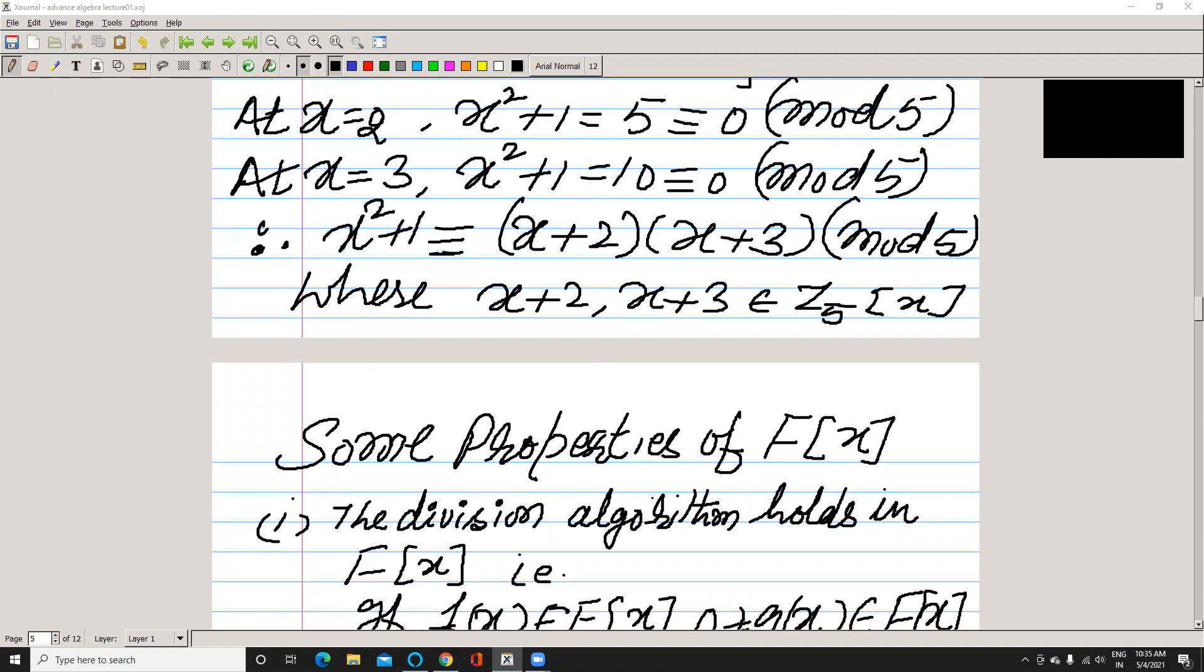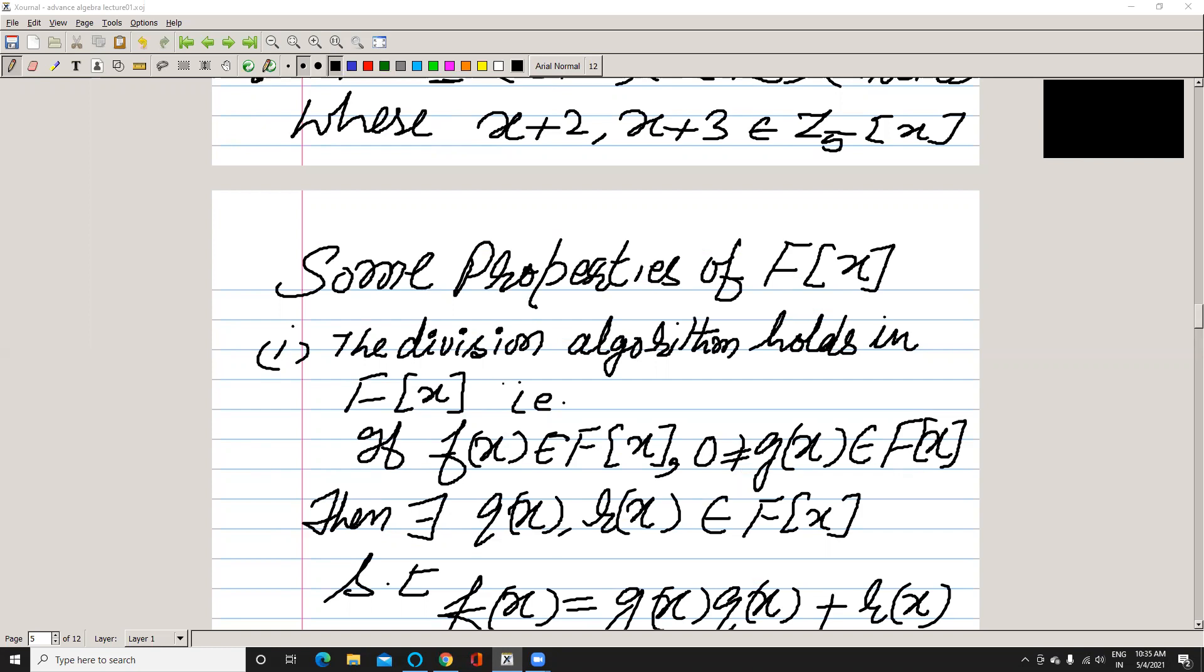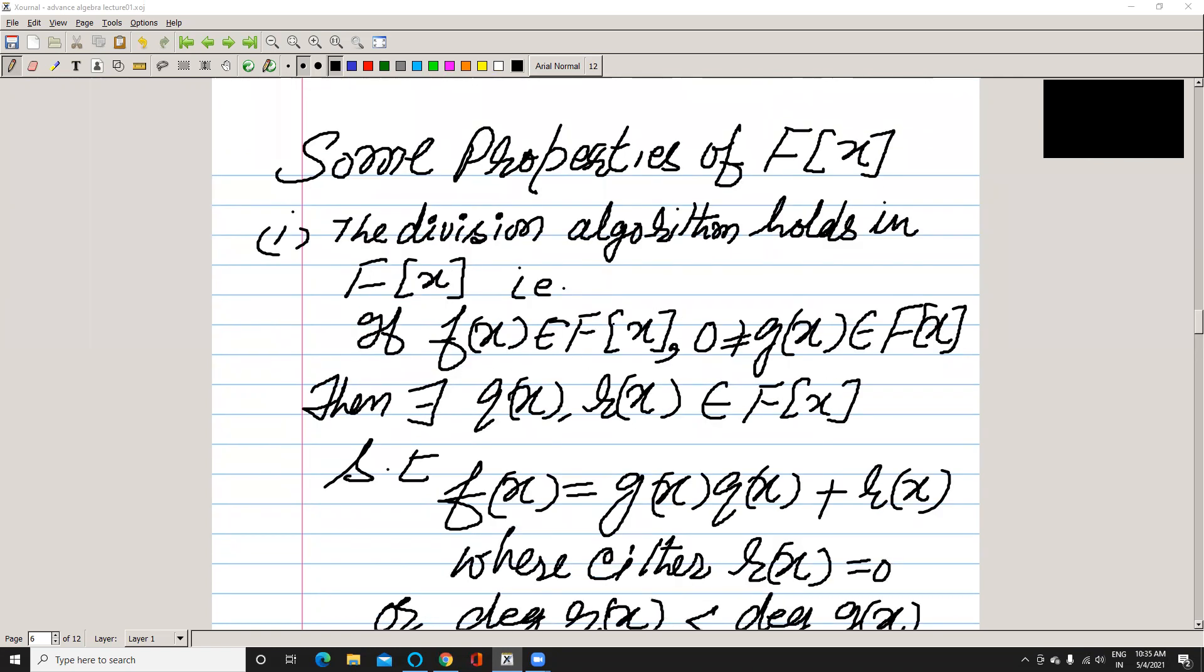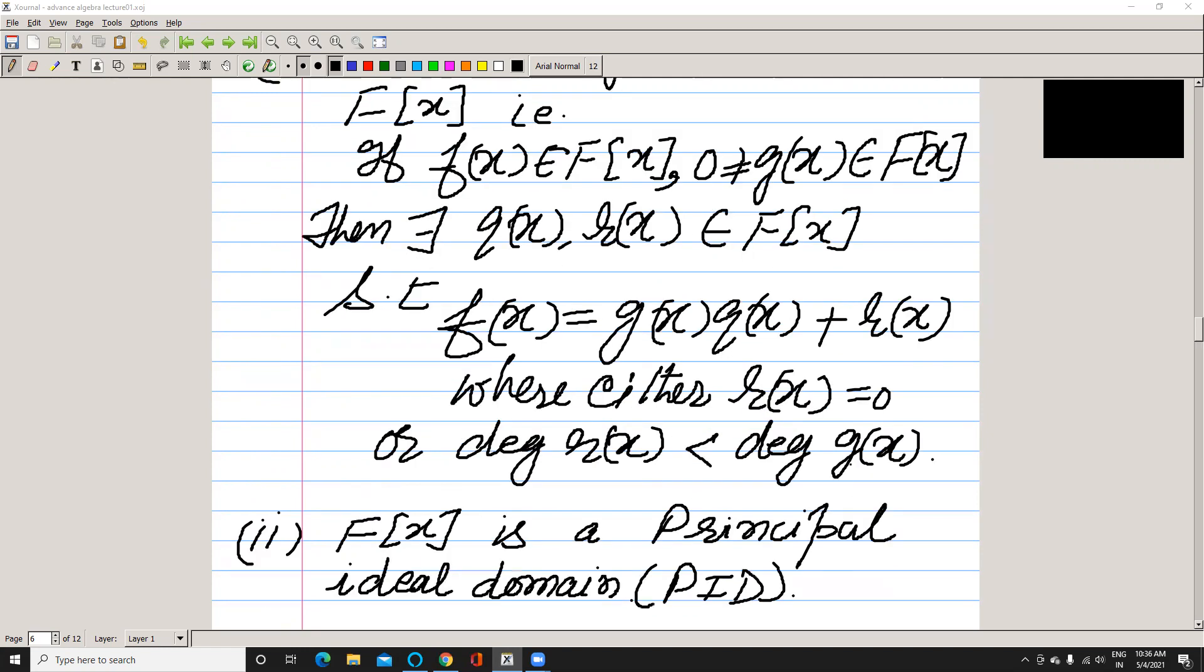Now we discuss some properties of F[x], the ring of polynomials. First is the division algorithm. In this field, it is very familiar to us. If f is any polynomial, then there exists some non-zero g(x) in this field F[x], and there exist two polynomials q(x) and r(x) such that after dividing f(x) by g(x), we get this relation where either r(x) = 0 or degree of r(x) is less than degree of g(x).